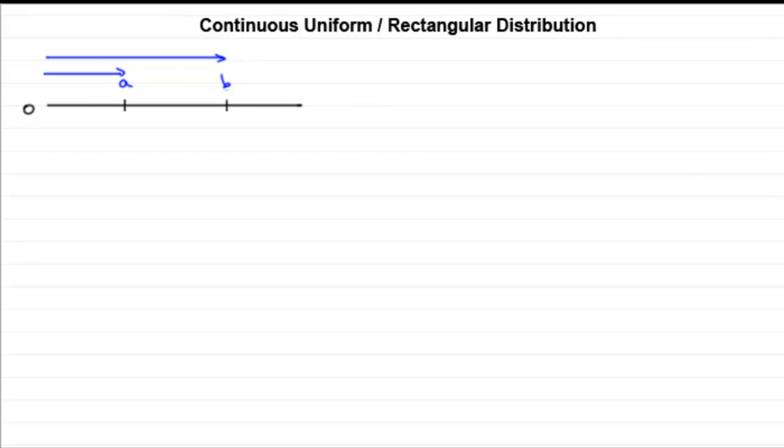Now suppose you're asked to put a cross somewhere in between A and B, and where you place this cross is equally likely. You're not biased to putting it in the middle, you can put it anywhere in this interval. The distance from O to that cross is a distance of x units.